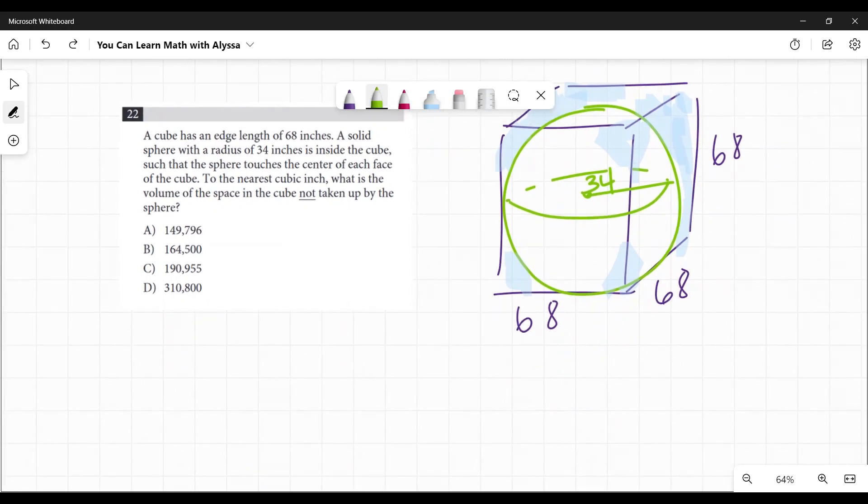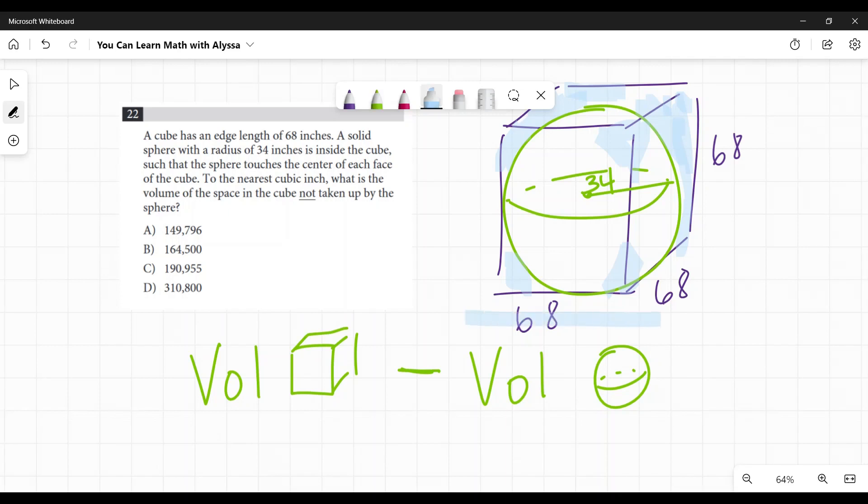So you're going to figure out the volume of the cube and subtract the volume of the sphere to find out what that little blue area is. Volume of the cube is going to be length times width times height, or side cubed. You might see it represented either way in your math book. In this case, it would be 68 times 68 times 68.